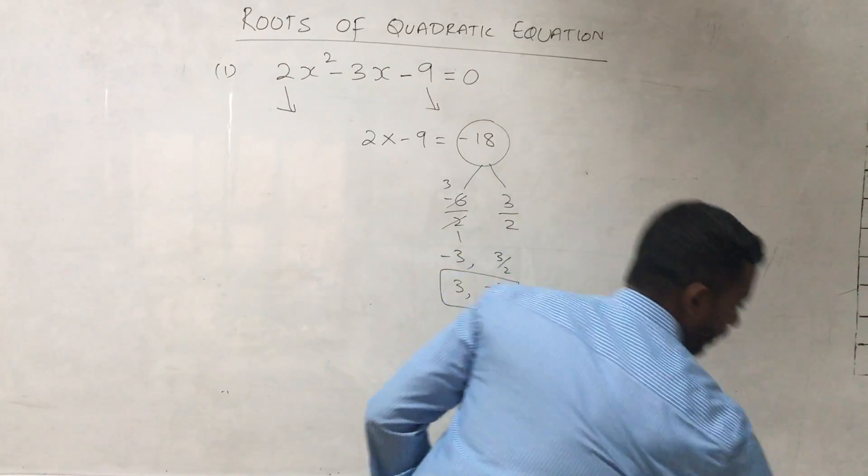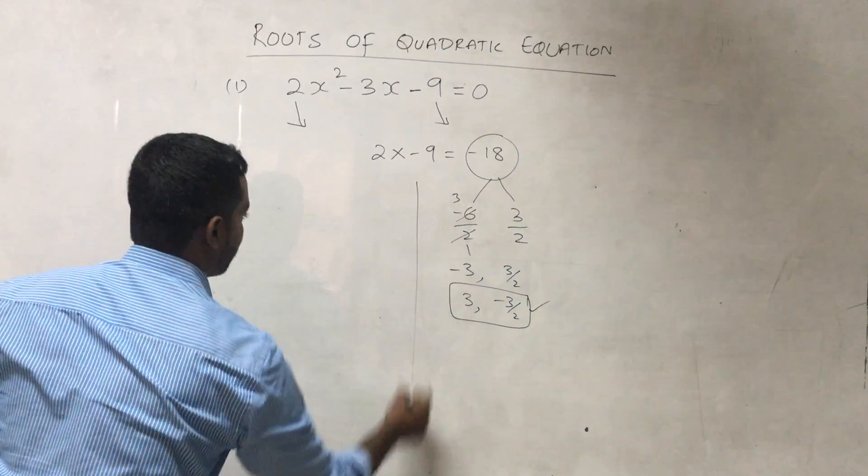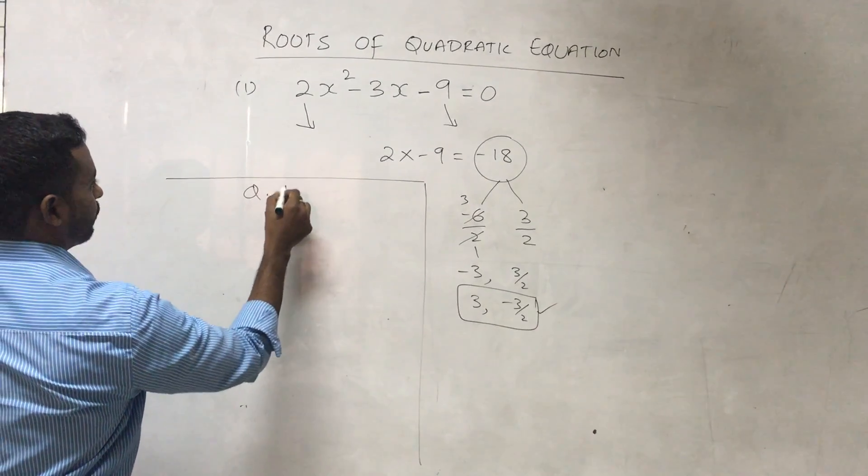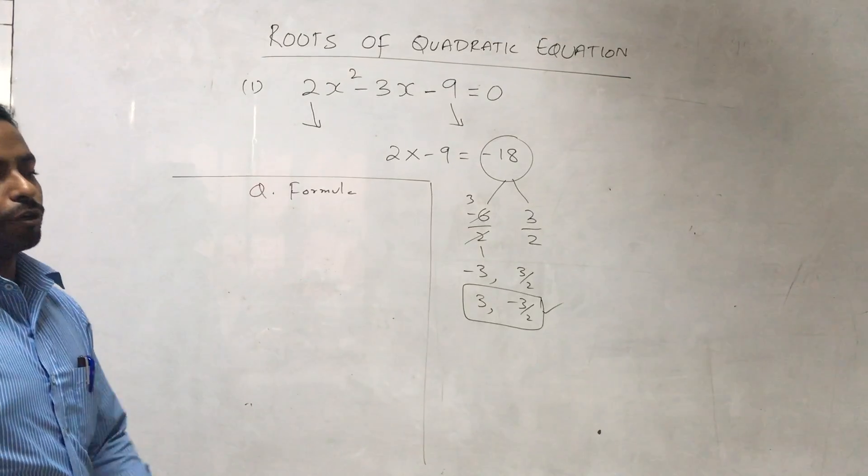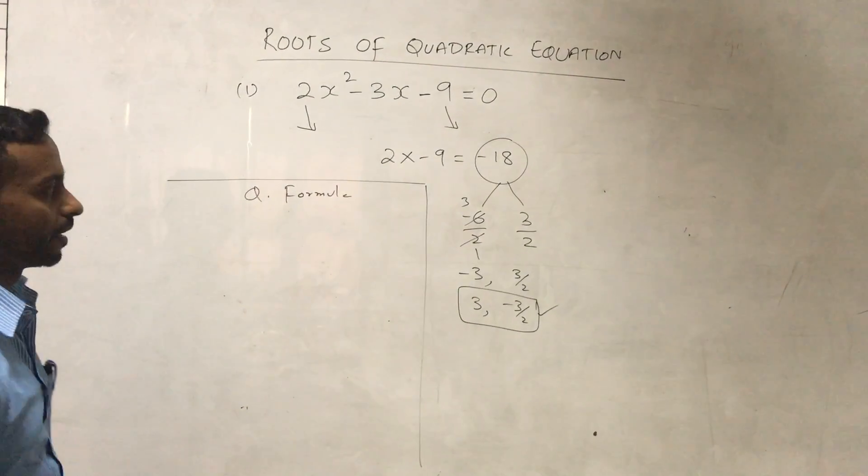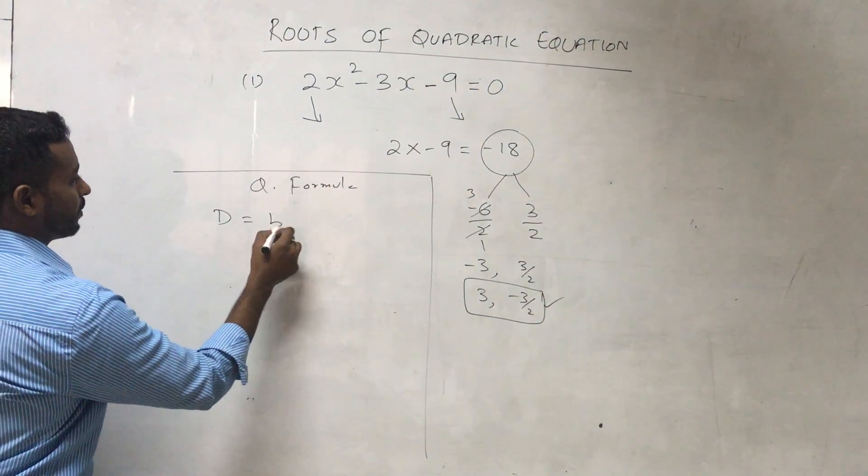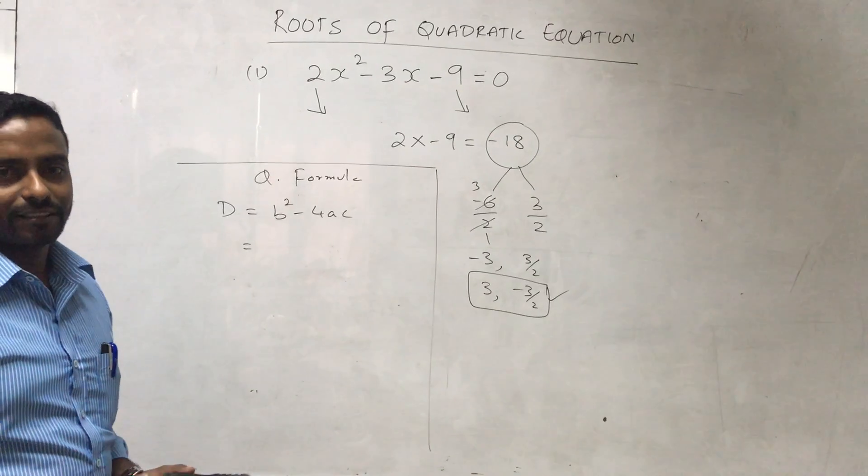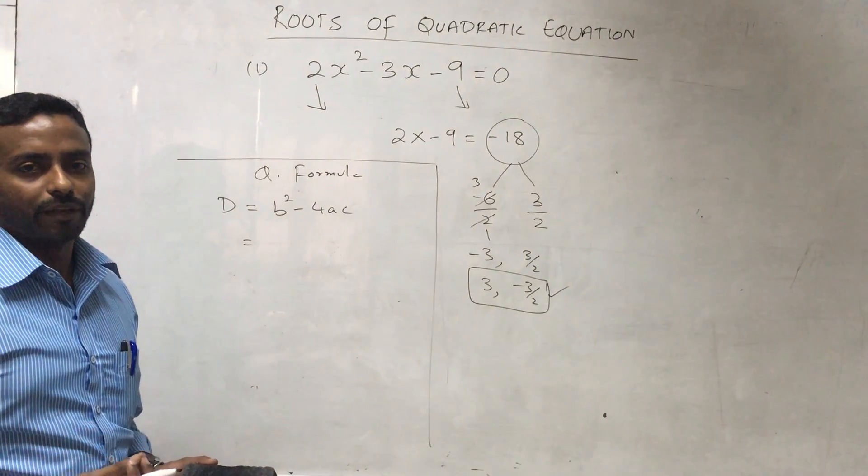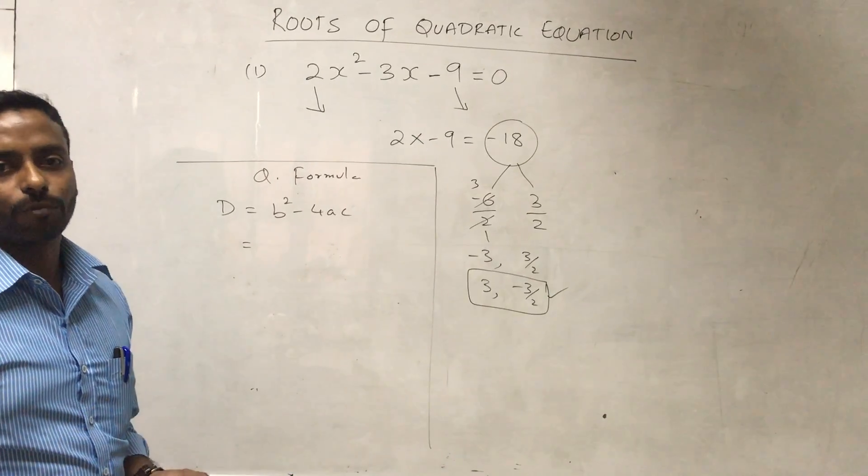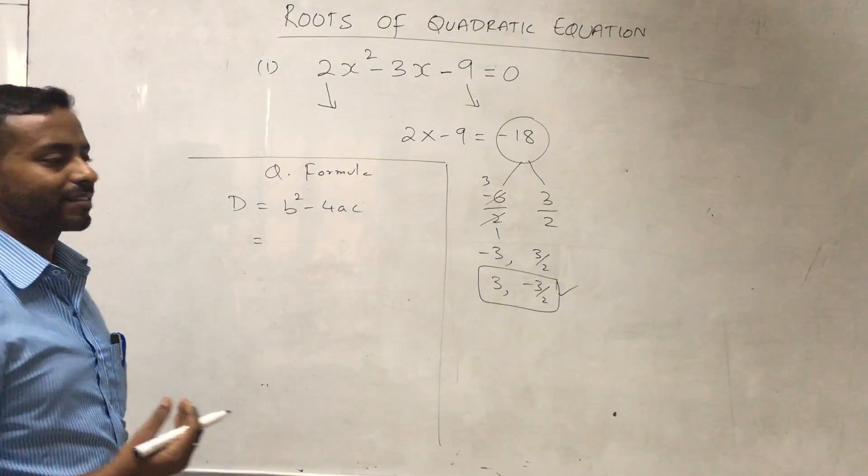Now we will do it by the method of quadratic formula. To get the roots by quadratic formula, we need the discriminant. Discriminant is b² - 4ac because it decides how our roots should be, whether they should be real, unequal, or equal.